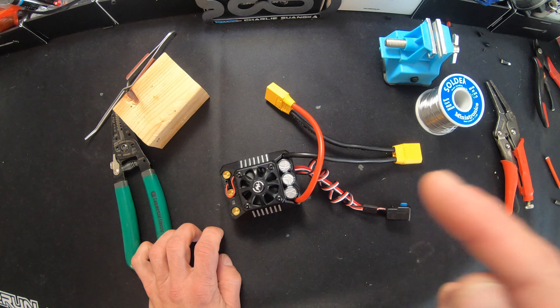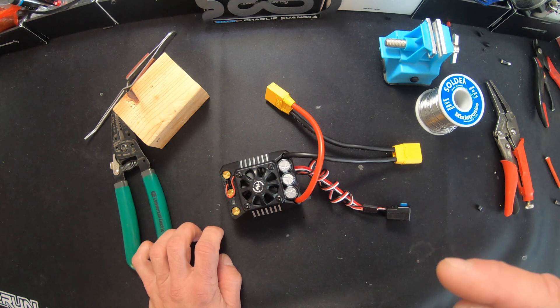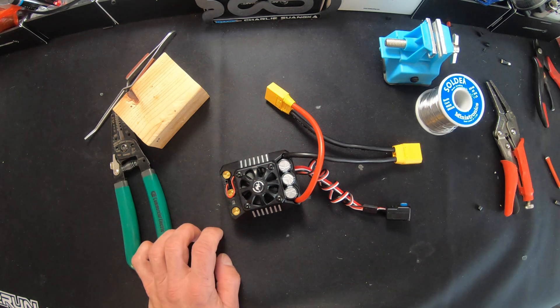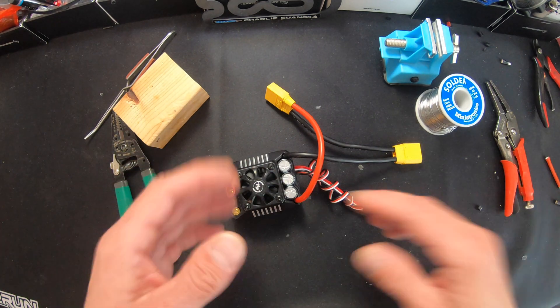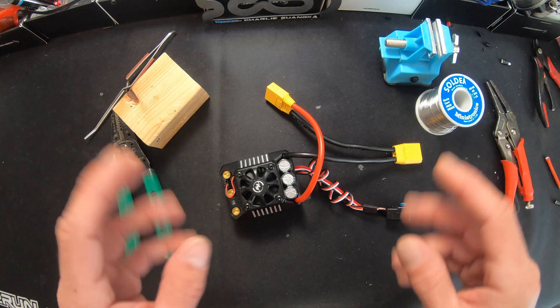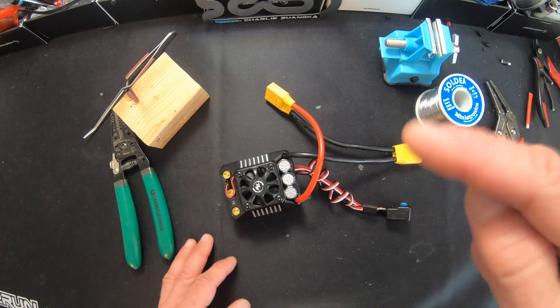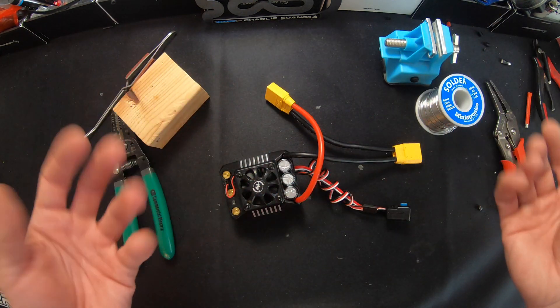So when you solder, wear eye protection and work in a well-ventilated area. Solder smoke will shorten your life drastically and solder splashes and wires flick around and solder goes everywhere. So be very, very careful when it comes to that sort of stuff. This ain't no joke. It's molten metal for crying out loud.